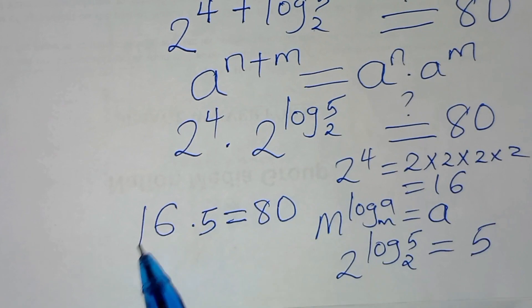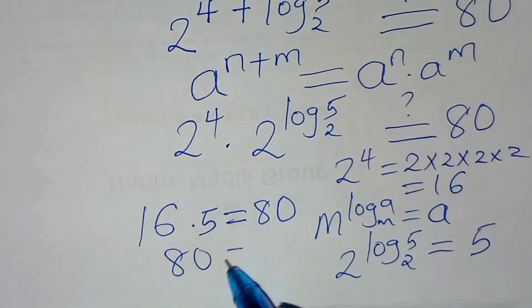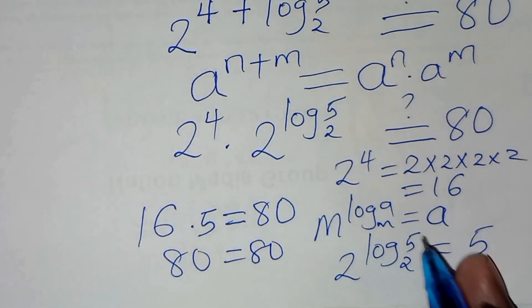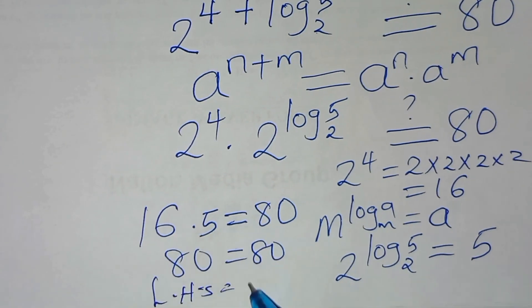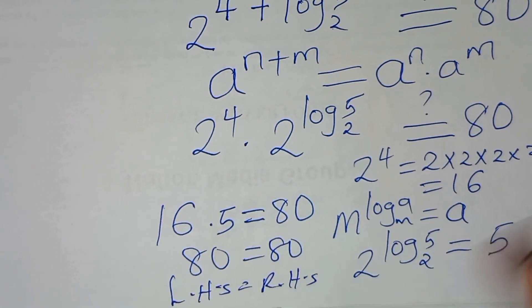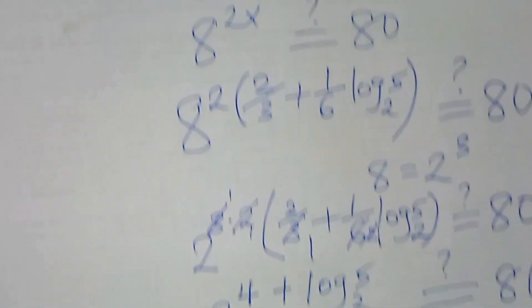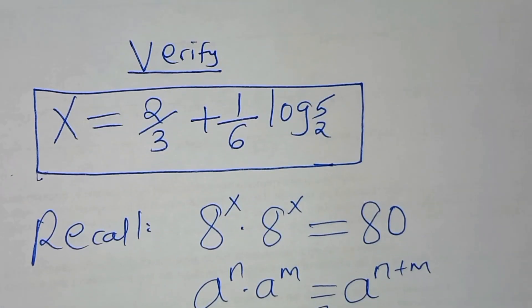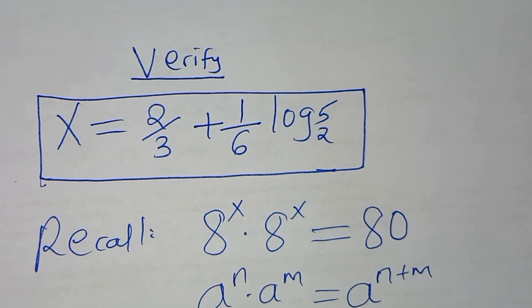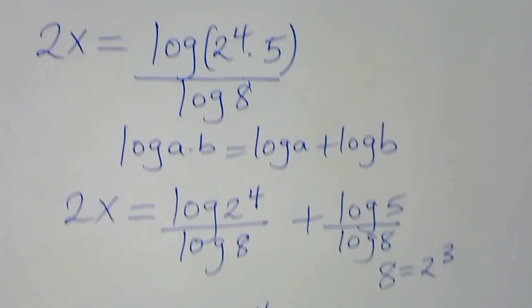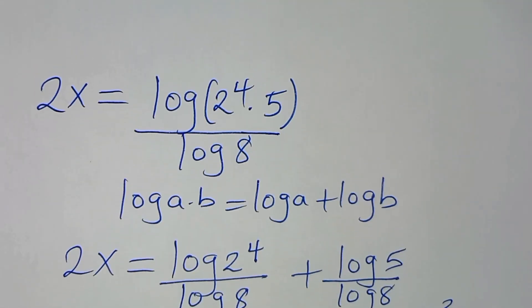So here we have 16 times 5, this is equal to 80. This shows that the left side equals the right side, and therefore the value of x, which is 2/3 plus (1/6)·log base 2 of 5, actually satisfies the equation. Please like this video and subscribe.